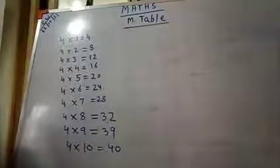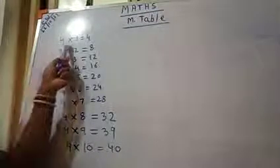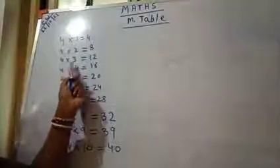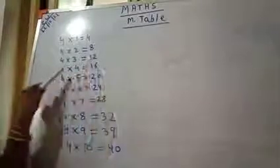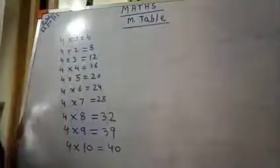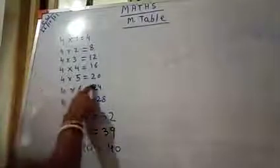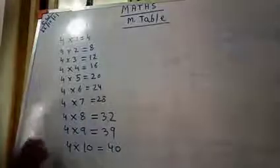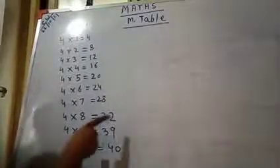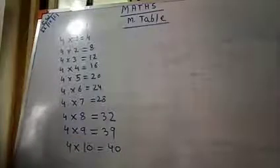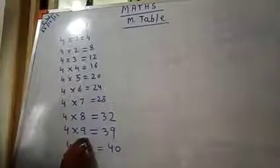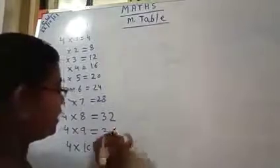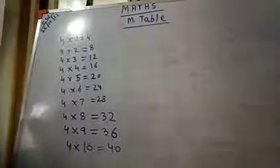Say, children — see the table of 4. 4, 1's are 4. 4, 2's are 8. 4, 3's are 12. 4, 4's are 16. 4, 5's are 20. 4, 6's are 24. 4, 7's are 28. 4, 8's are 32. 4, 9's are — sorry, here it will be 36. 4, 10's are 40.